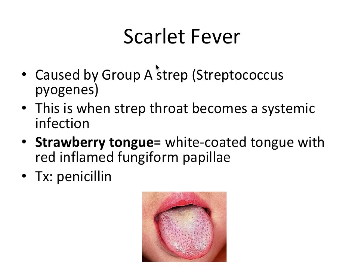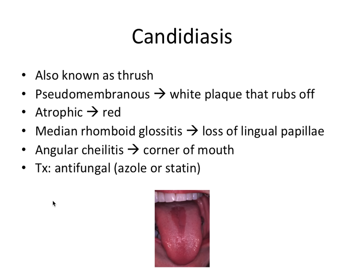Scarlet fever is caused by group A strep — Streptococcus pyogenes — and occurs when strep throat becomes a systemic infection. The classic oral mucosal lesion is strawberry tongue: a white-coated tongue with red inflamed fungiform papillae. Know specifically that it's the fungiform papillae affected here, distinct from hairy tongue which involves elongated filiform papillae. Treatment, since it's bacterial, is penicillin.